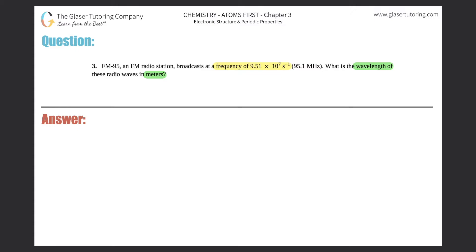I see that they gave me a frequency, and frequency in chemistry is a ν symbol. So I have a ν of 9.51 times 10 to the seventh per second. Just know that per second is the same thing as Hertz. They're asking for a wavelength. Wavelength in chemistry is represented by lambda. So I'm going back and forth between wavelength and frequency.